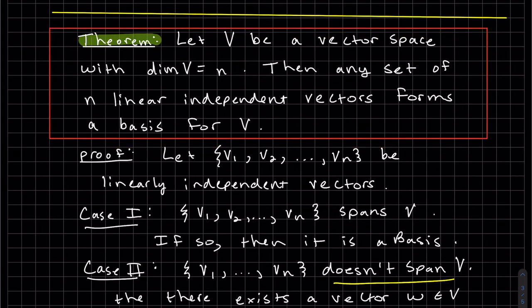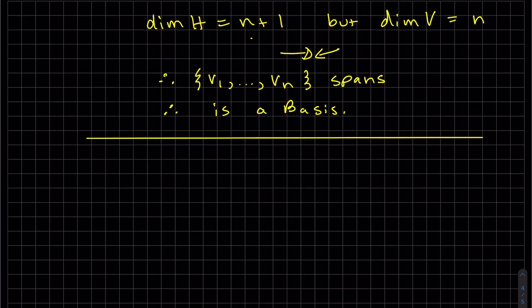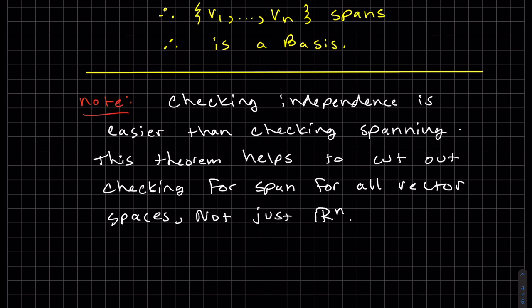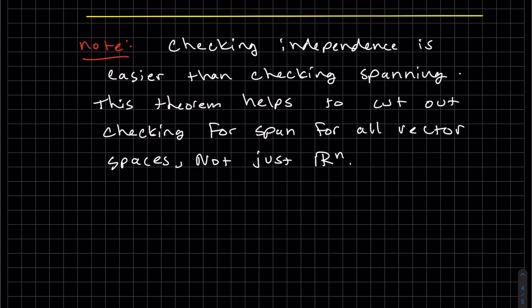As I mentioned, this is very similar to our n elements in rn, and if they're independent, then it's a basis. It's very similar, but now we've extended it to any vector. This is nice because checking independence is easier than checking spanning. And so this theorem helps to cut out checking for span for all vector spaces, not just rn. That's all for now. Thanks.